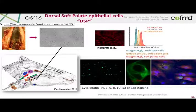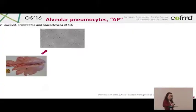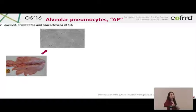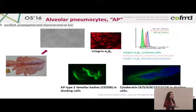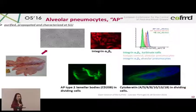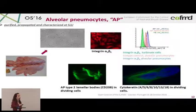DSP cells were purified, propagated, and characterized at SLU. They were characterized for integrin alpha-v beta-6 expression and cytokeratin expression. The same work was done with alveolar pneumocytes, which I will call AP cells — cells from sites where no persistence has been described — and they were similarly characterized for integrin expression, type 2 lamellar body staining, and cytokeratin staining.